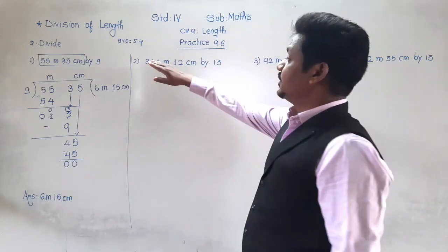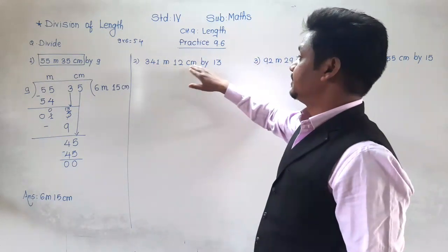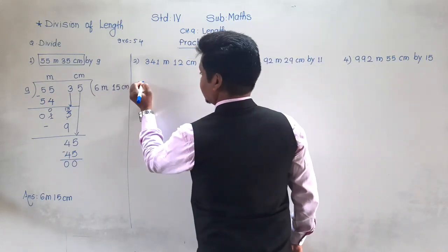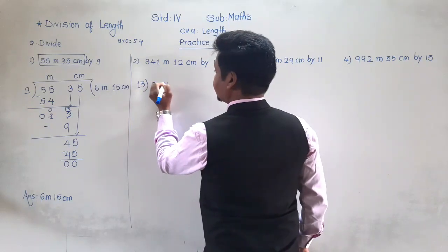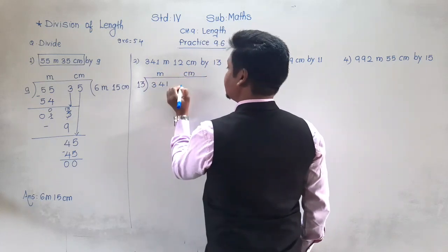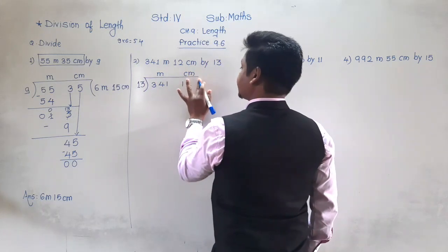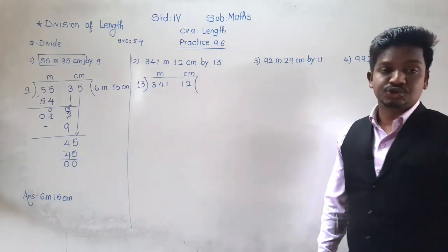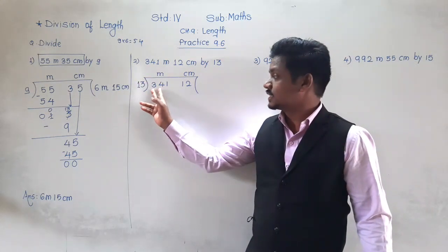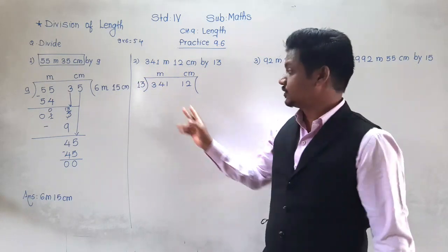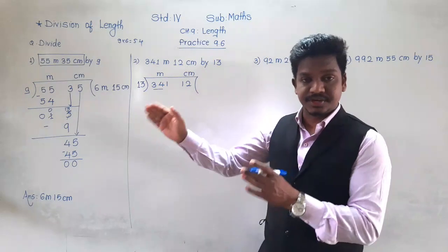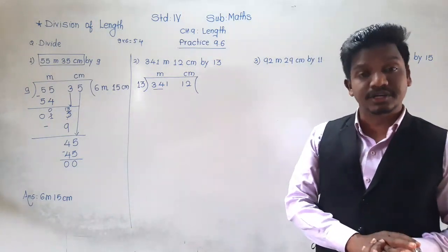Next: 341 meter 12 centimeter divided by 13. Arrange the same way — 13 as divisor, then meter column with 341 and centimeter column with 12. You should know the table of 13; if you don't, write it here. In the meter column there is 341, so first we divide the first two digits, 34.